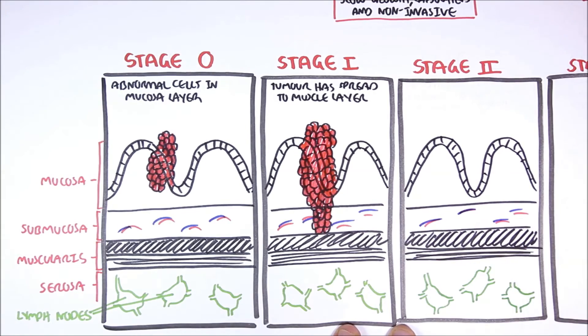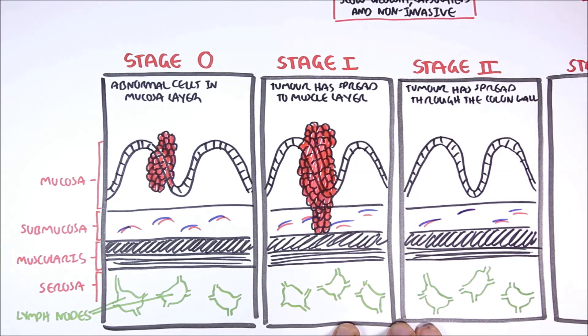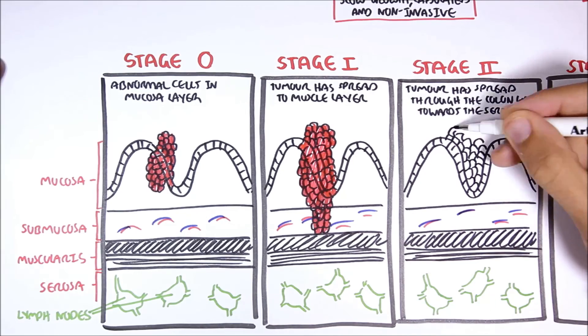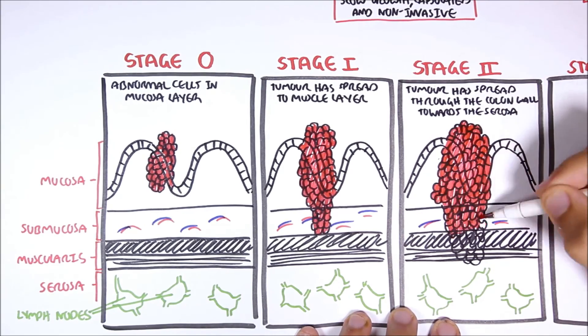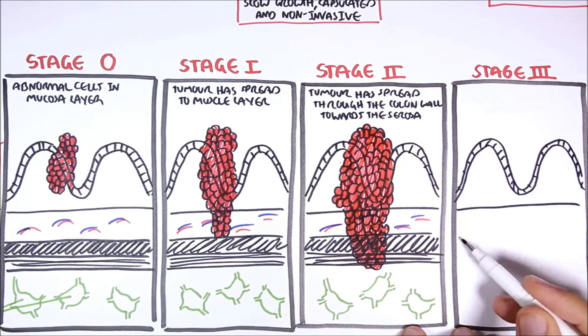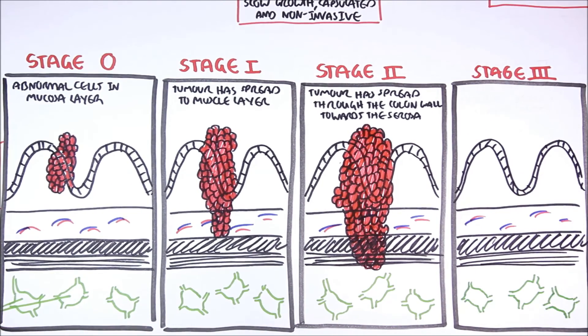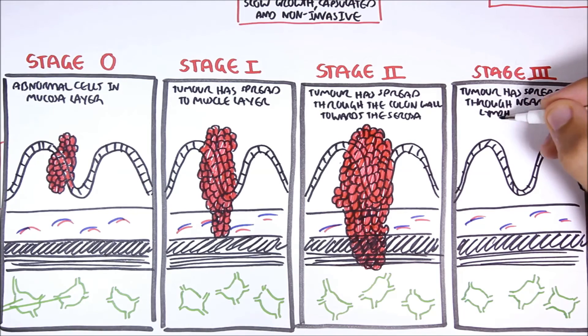Stage 2, the tumor has spread through the colon wall towards the serosa. Stage 3, the tumor has spread through nearby lymph nodes.